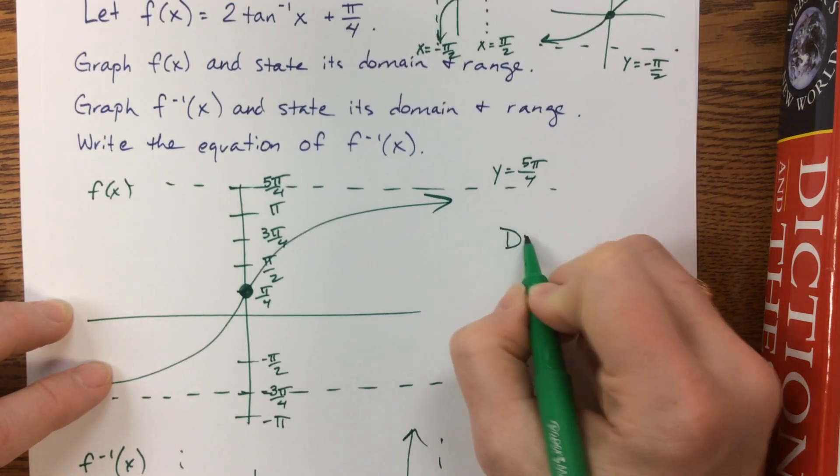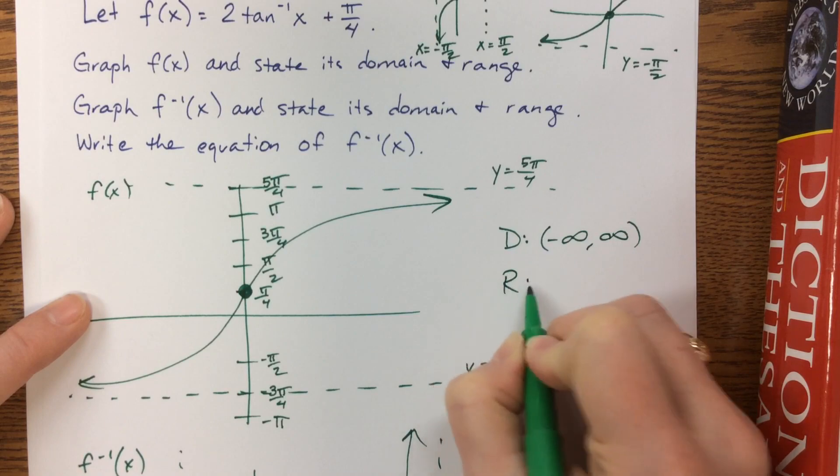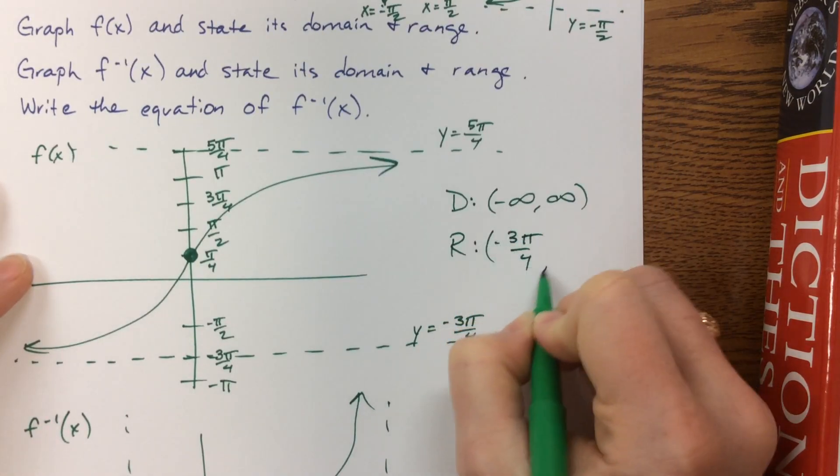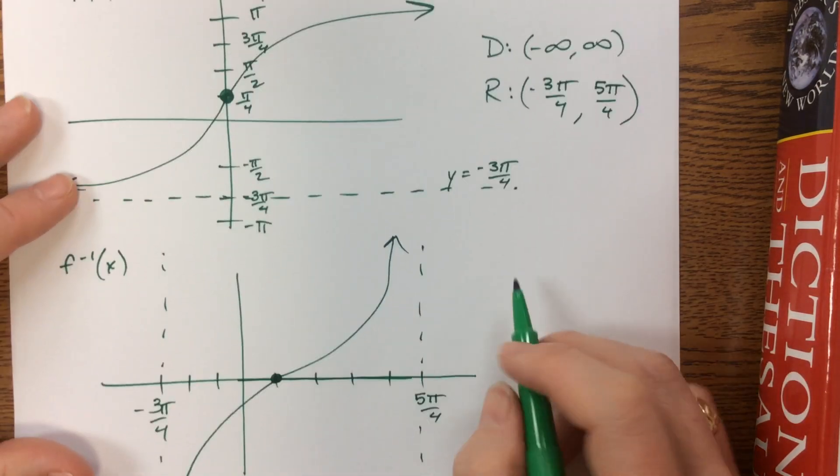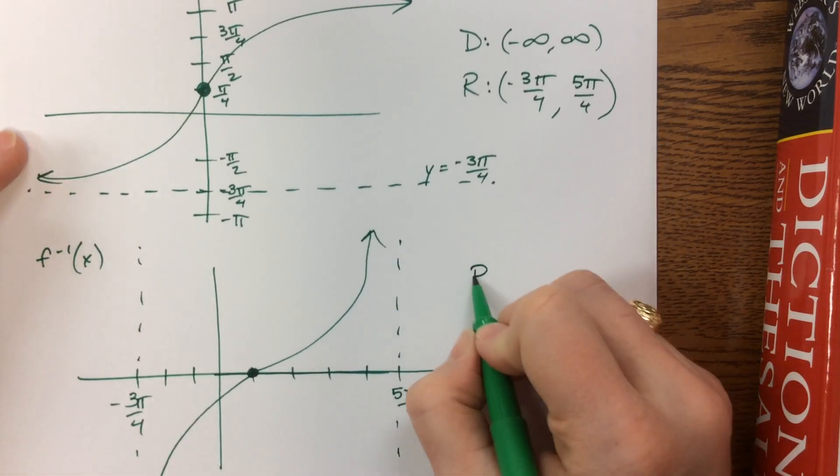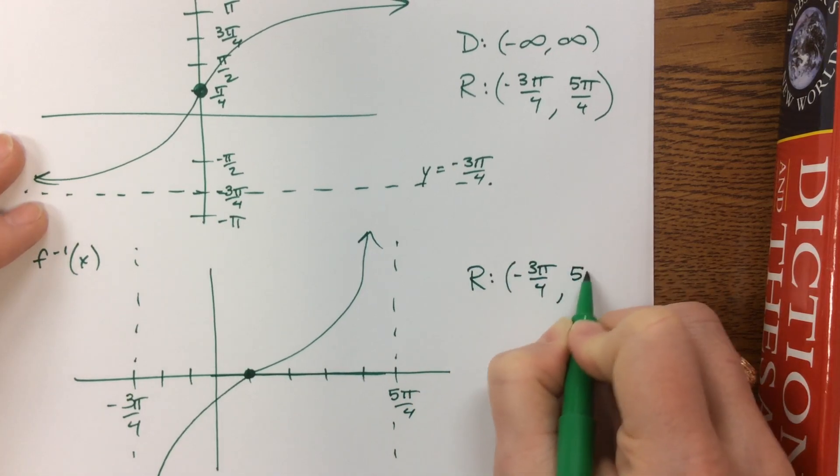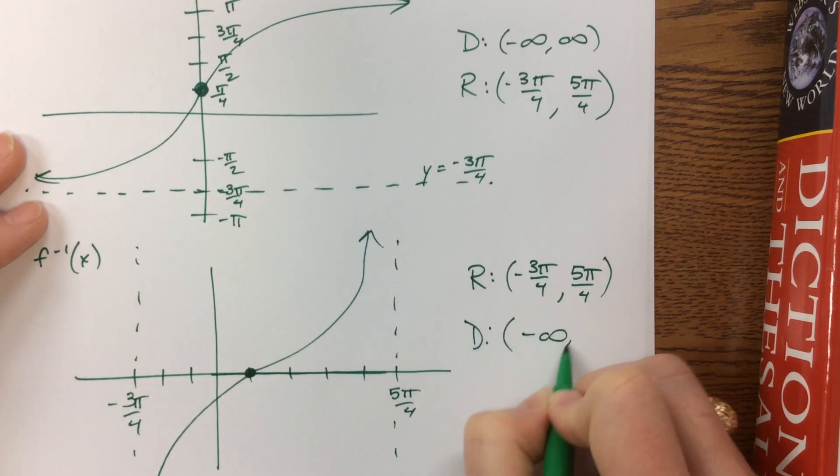Oh, I forgot to tell you, the domain on this one is all real. And the range went from negative 3π/4 to 5π/4, but I did not include those because those are asymptotes. Now we're looking at a range of negative 3π/4 to 5π/4, and a domain of all real.